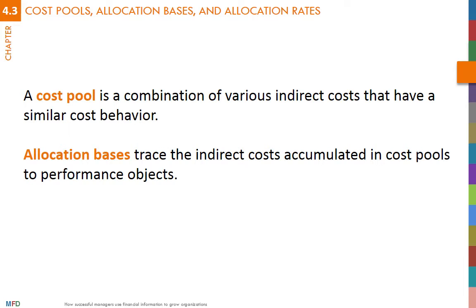Traditional allocation bases include: cost of direct materials, cost of direct labor, number of hours of direct labor, number of machine hours, and square meters of manufacturing space.